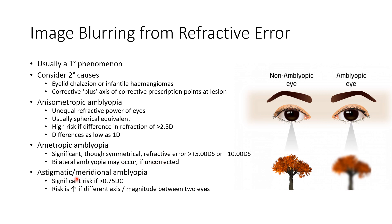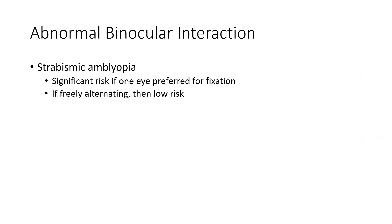Coming to astigmatic or meridional amblyopia, there is significant risk if the refraction is greater than 0.75 diopter cylindrical. The risk increases if the axis is different or when the magnitude is different between the two eyes.